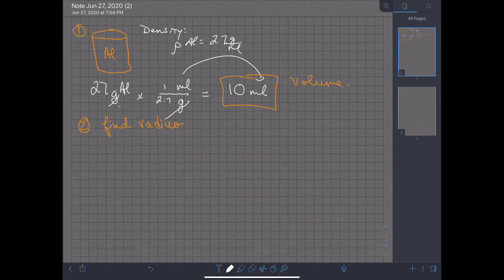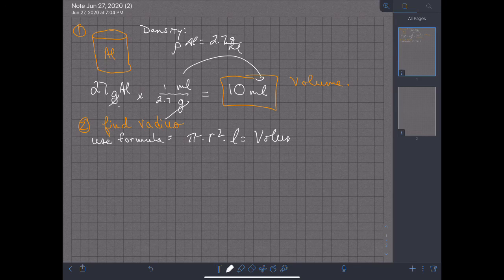And here's that formula. It's pi times the radius squared times the length is equal to the volume. So we already know the volume. Therefore, we already know that the volume is 10 milliliters.